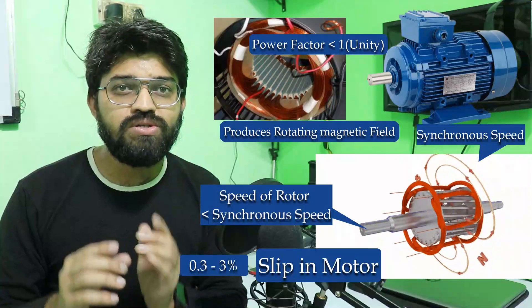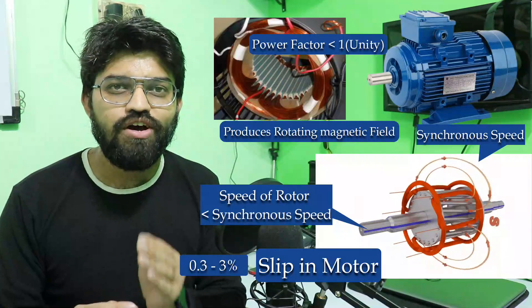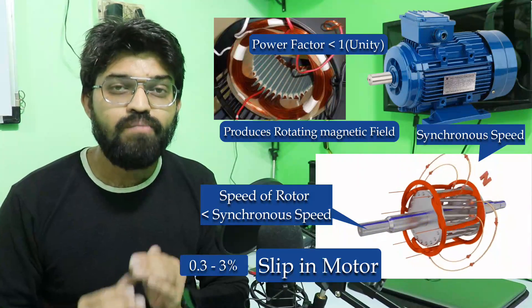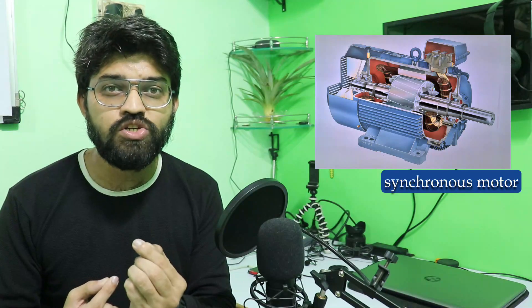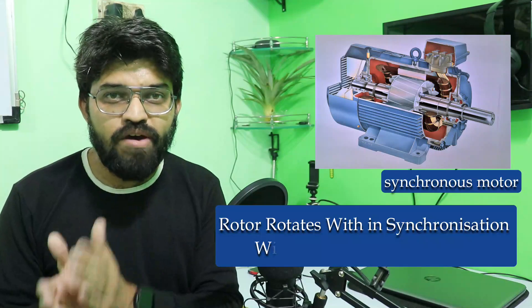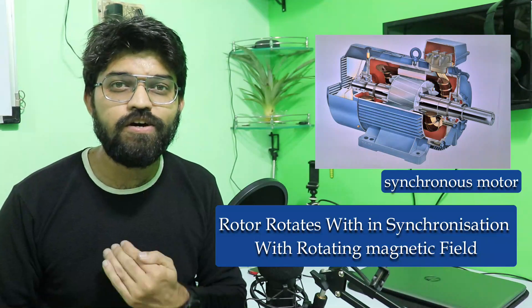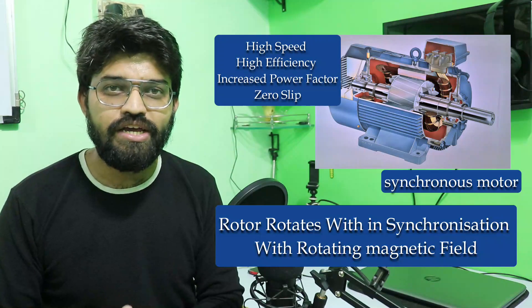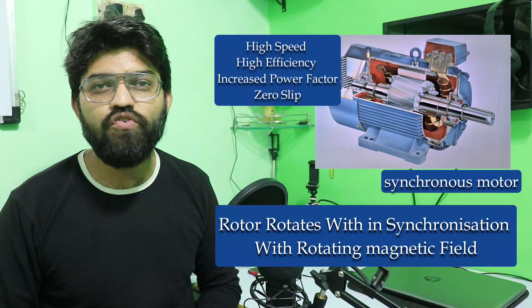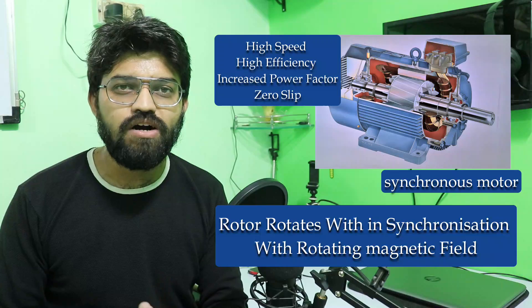To reduce the slip and to increase the power factor, we need to rotate the rotor in synchronization with the rotating magnetic field (RMF). This can be achieved by implementing a synchronous motor. In a synchronous motor, the rotor shaft rotates in synchronization with the RMF, so the shaft produces the synchronized speed. The power factor will be unity and slip will become zero.